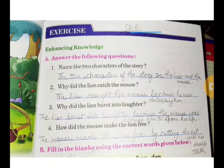Second is: Why did the lion catch the mouse? The answer is the lion caught the mouse because he was disturbing him.